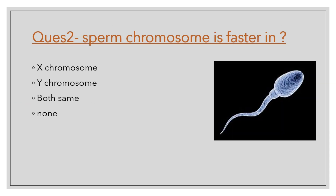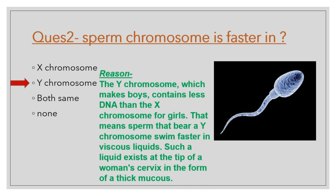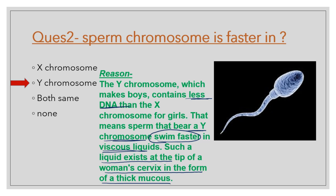Question number 2: Sperm with which chromosome swims faster — X chromosome, Y chromosome, both, or none? The correct option is Y chromosome. The Y chromosome, which makes boys, contains less DNA than the X chromosome for girls. So the sperm bearing the Y chromosome swims faster through viscous fluid such as the thick mucus at the tip of the woman's cervix.